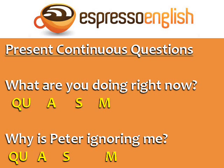Here are two questions in the present continuous. What are you doing right now? Why is Peter ignoring me? It's the same formula, but the auxiliary verb is a form of the verb 'to be' — 'are' or 'is' — instead of 'do' or 'does'.